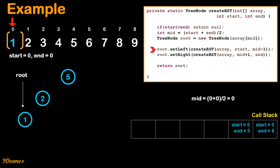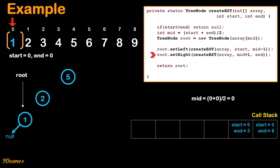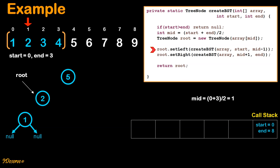Since null was returned from the previous recursion call, we set root.left to null and move on to the next step. We call the function recursively for the right sub-array where start index is 1 and end index is 0. Since start is greater than end, we return null. We go back to the previous call stack where start index was 0 and end index was 0. Since null was returned, we set root.right to null. Finally we return node 1. We go back to the previous call stack where start index was 0 and end was 3 — since node 1 was returned, we set 2.left to 1.